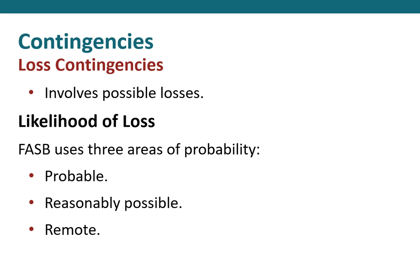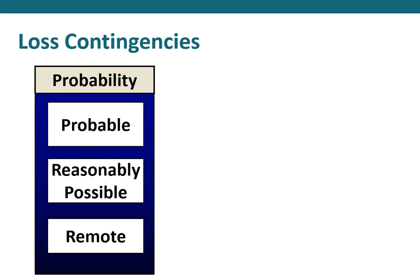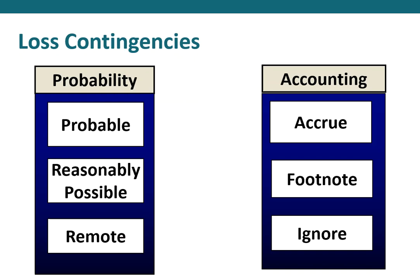Typically, we rely on legal representation letters — letters from attorneys stating that the firm has a possible loss contingency and whether it's probable, reasonably possible, or remote, along with any associated numbers. So we have three probability levels and three ways to account for them: we either accrue a number, put it in the footnotes, or ignore it altogether.